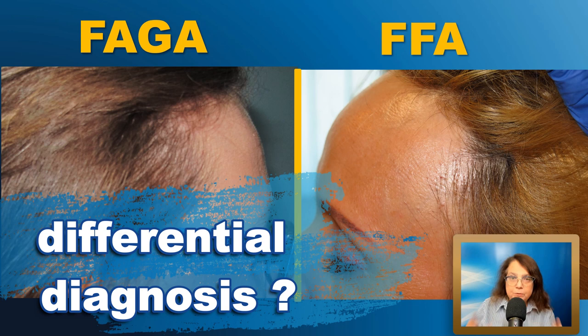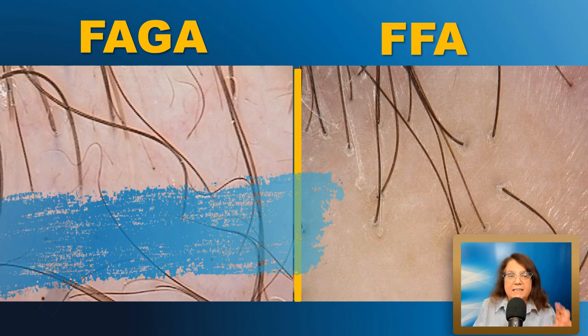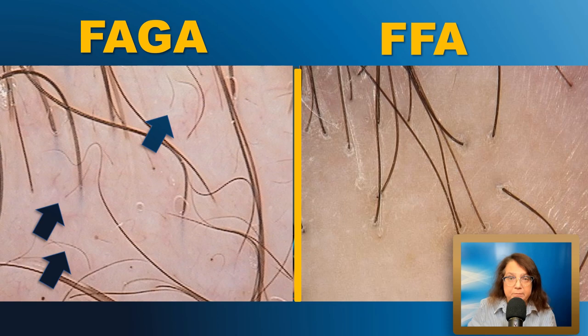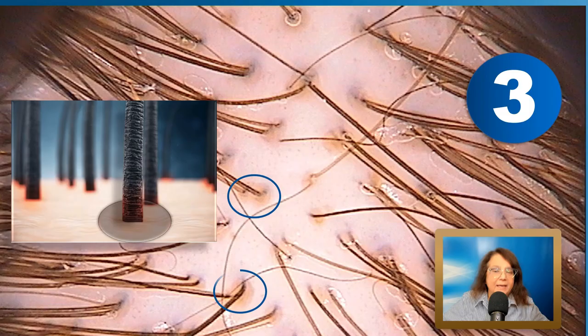I would like to share a clinical scenario where trichoscopy and the presence of vellus hairs may be important for differential diagnosis. These are two patients: one with female androgenetic alopecia and one with frontal fibrosing alopecia — clinically quite similar. However, in female androgenetic alopecia you will see multiple vellus hairs and multiple thin hairs. In frontal fibrosing alopecia there are no thin or vellus hairs, because this condition starts by affecting the small hairs — only thick hairs remain visible.